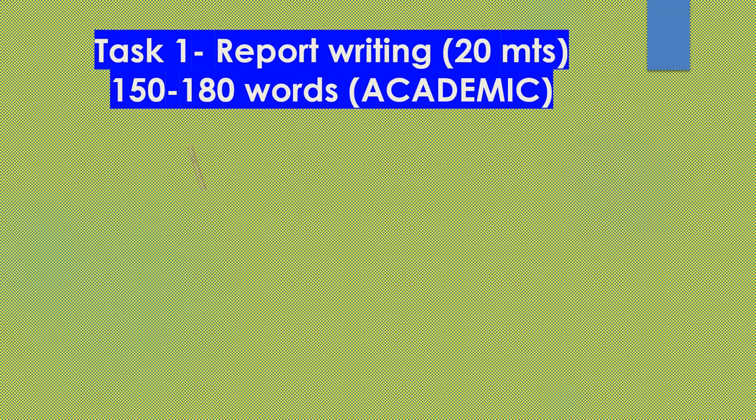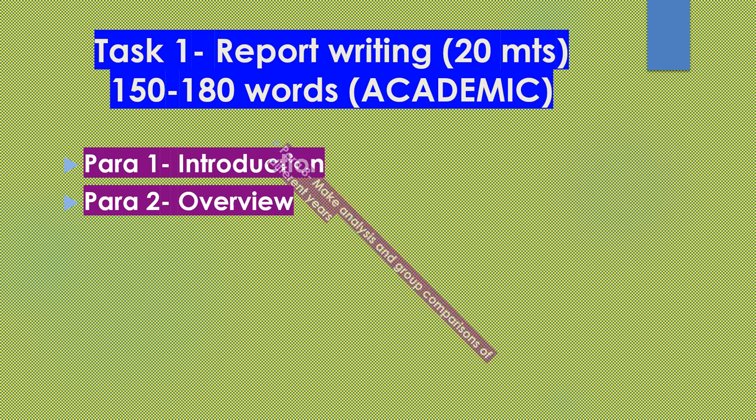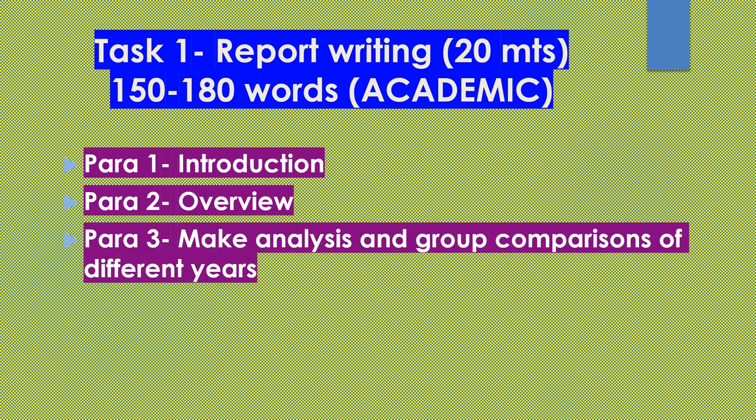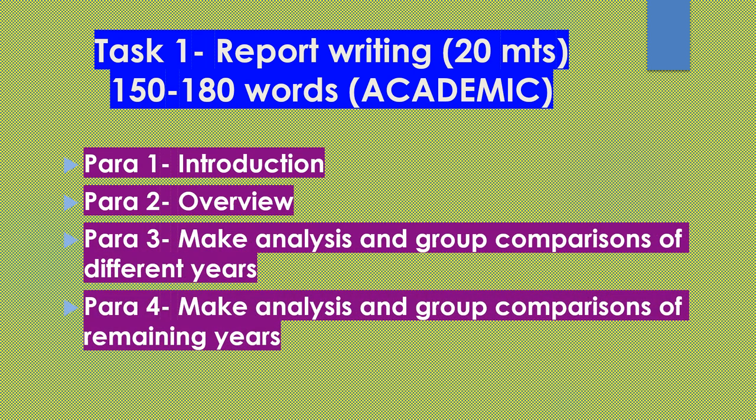Now let's take a look at the segregation of paragraphs. Paragraph 1 is the introduction. Paragraph 2 is the overview or summary. Paragraph 3 is to make analysis and group comparisons of different years. And paragraph 4 is to make analysis and group comparisons of the remaining years.